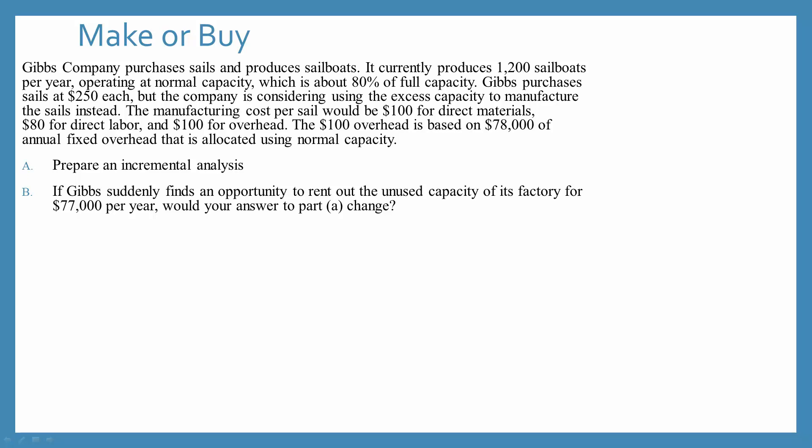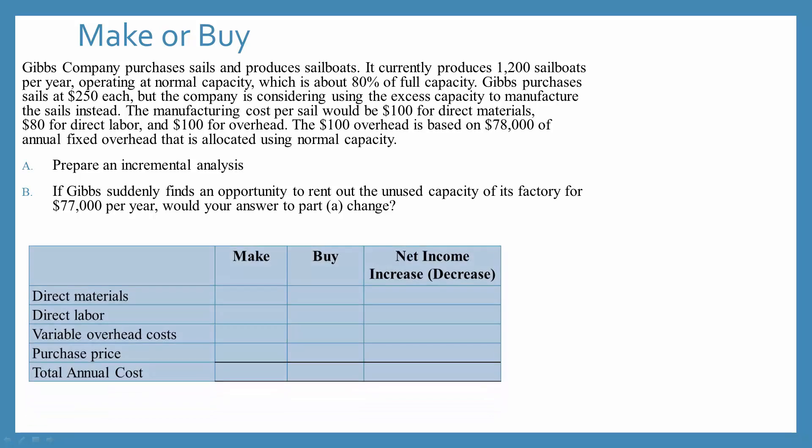The paragraph lists out all of the variable costs. So we need to do our analysis of the make or buy decision. Even though right now they're buying them, when we perform our analysis, we always go from make on the left to buy. So that's the way we're going to set up our table.